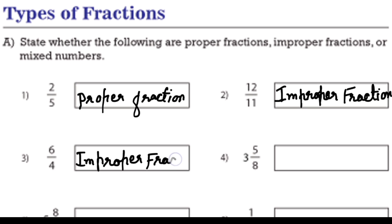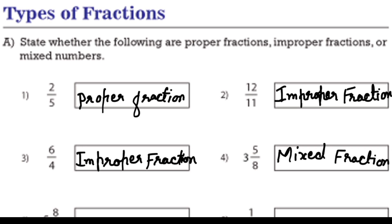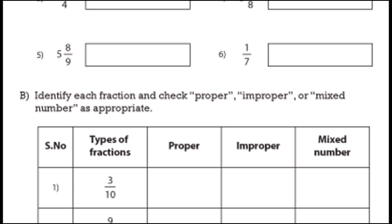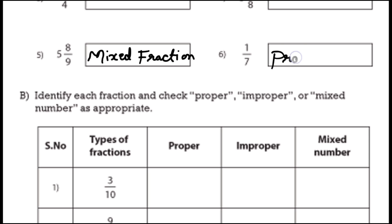In question 4, 3 and 5 by 8 — there is a whole number 3 along with a proper fraction 5 by 8, so together they form a mixed fraction. Question 5 is 5 and 8 by 9 — again there is a whole number with a proper fraction, so it is a mixed fraction. Question 6 is 1 by 7 — the numerator is smaller, so it is a proper fraction.